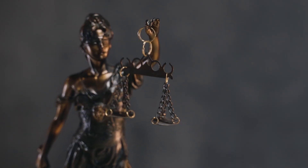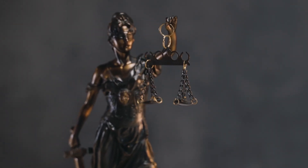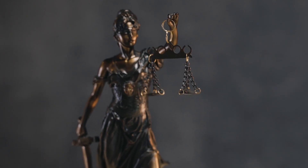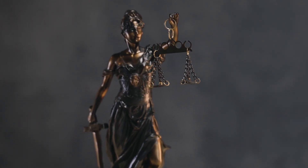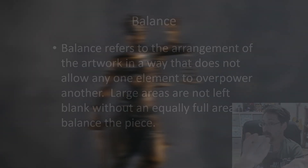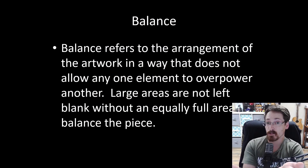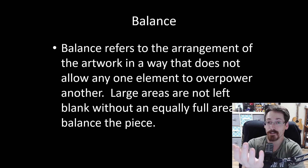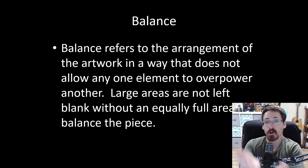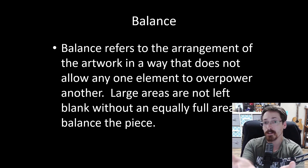You can imagine balance kind of like a scale. For instance, if you have a large square on one half of the artwork and a tiny circle on the other half, it's not going to be visually balanced because one side is going to look visually heavier than the other. Balance makes sure that all of those things are in equilibrium so it doesn't look offset.